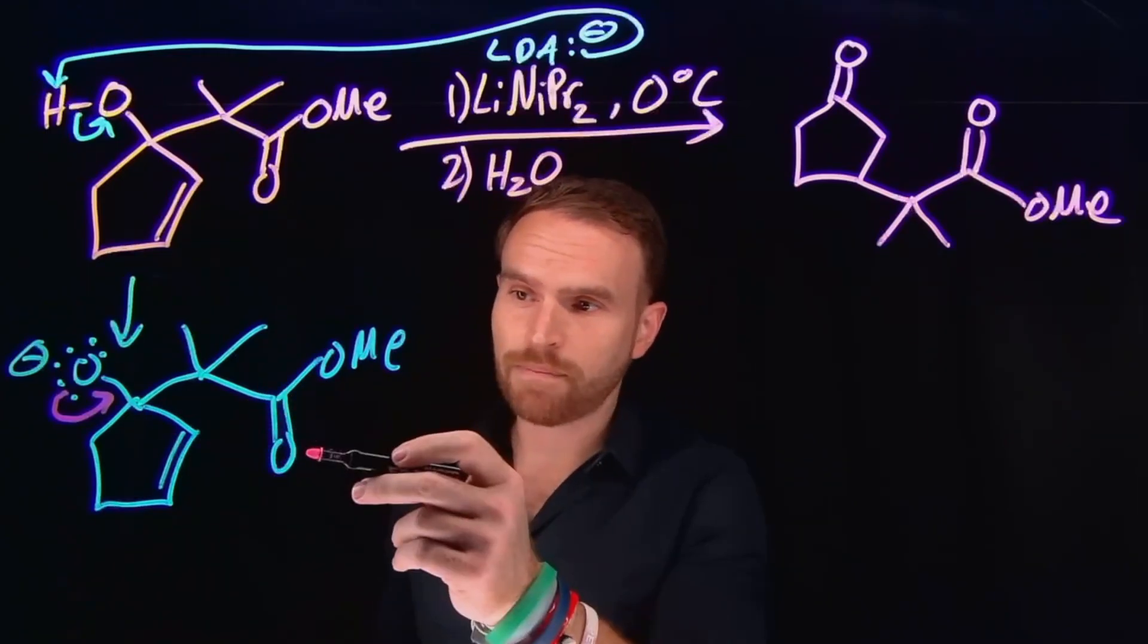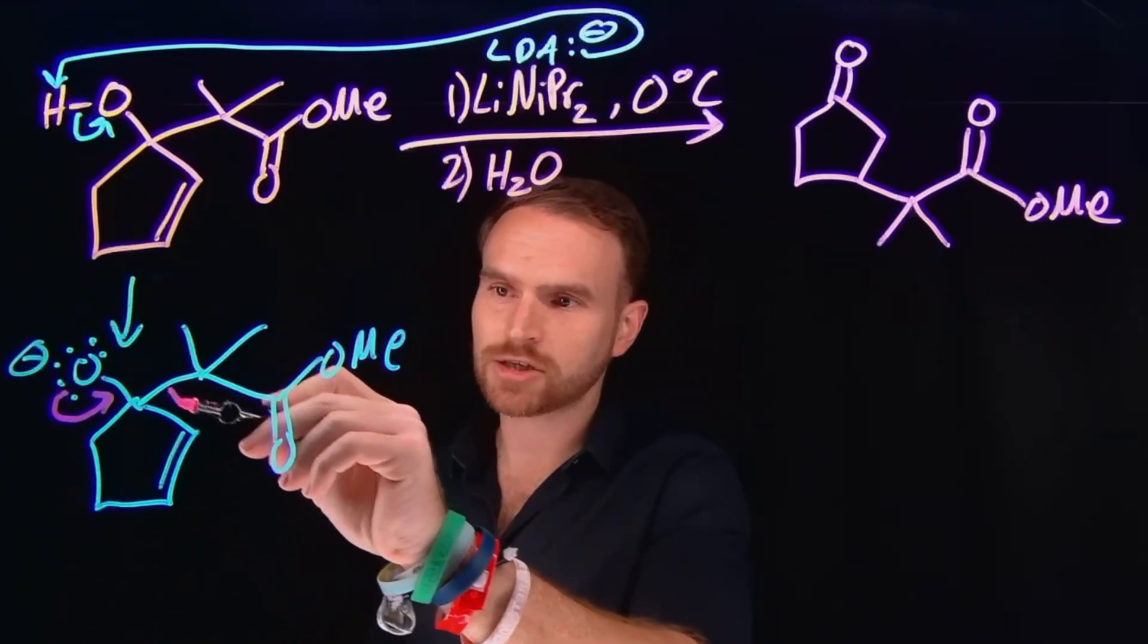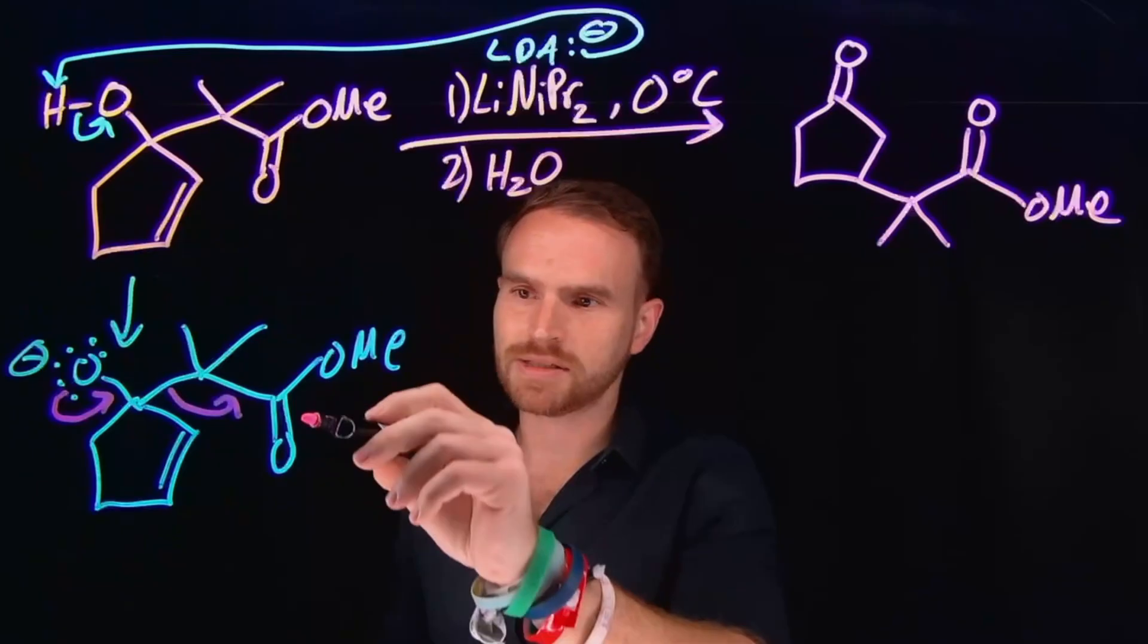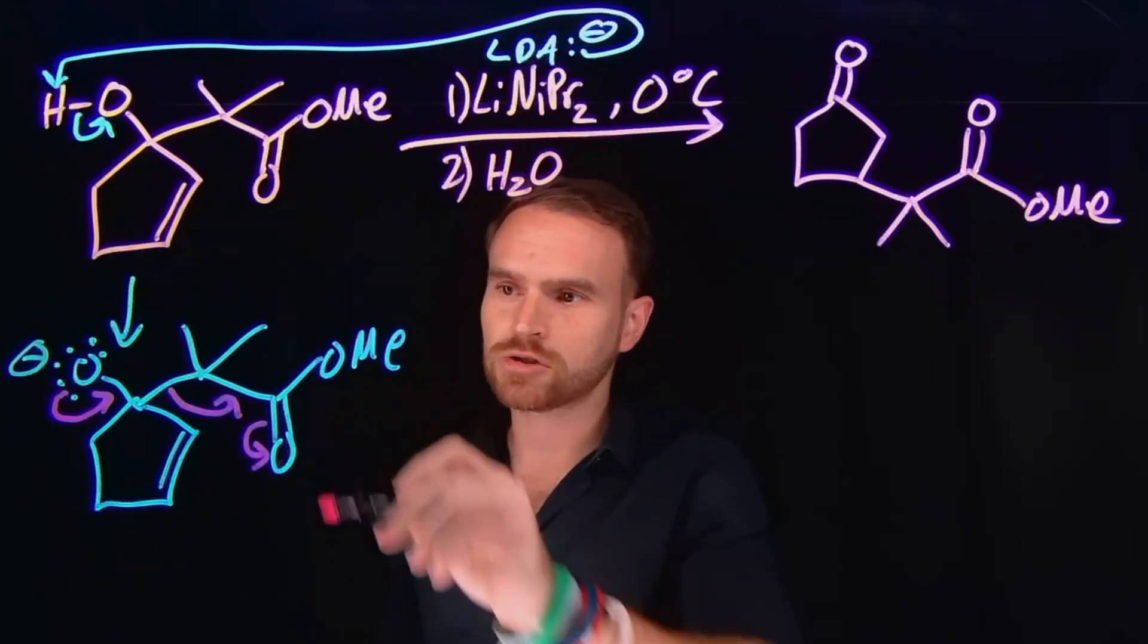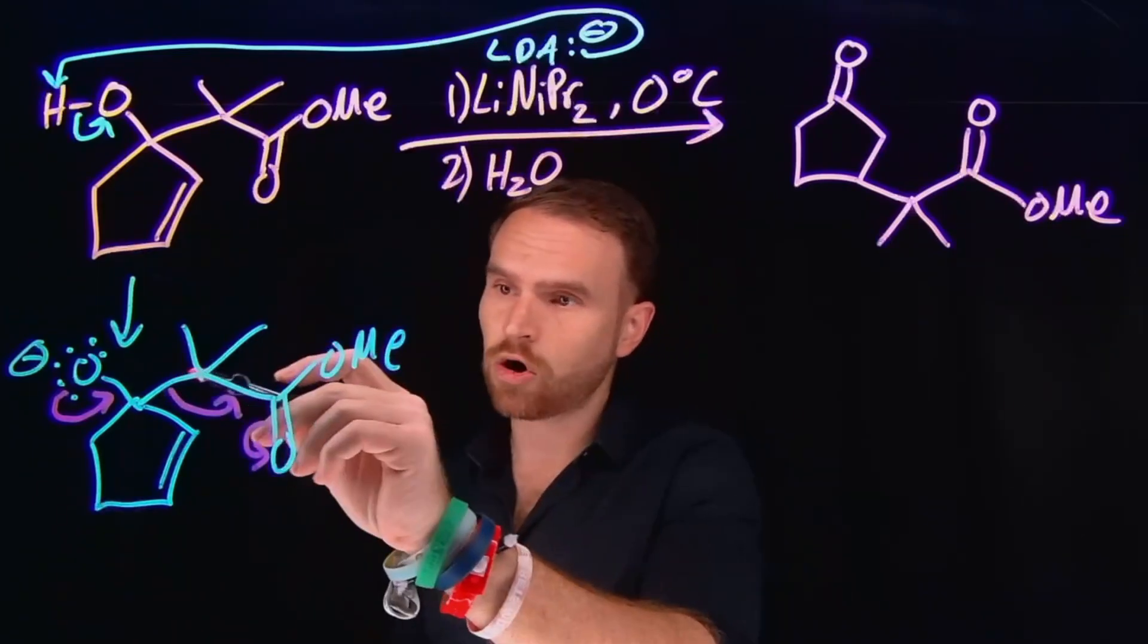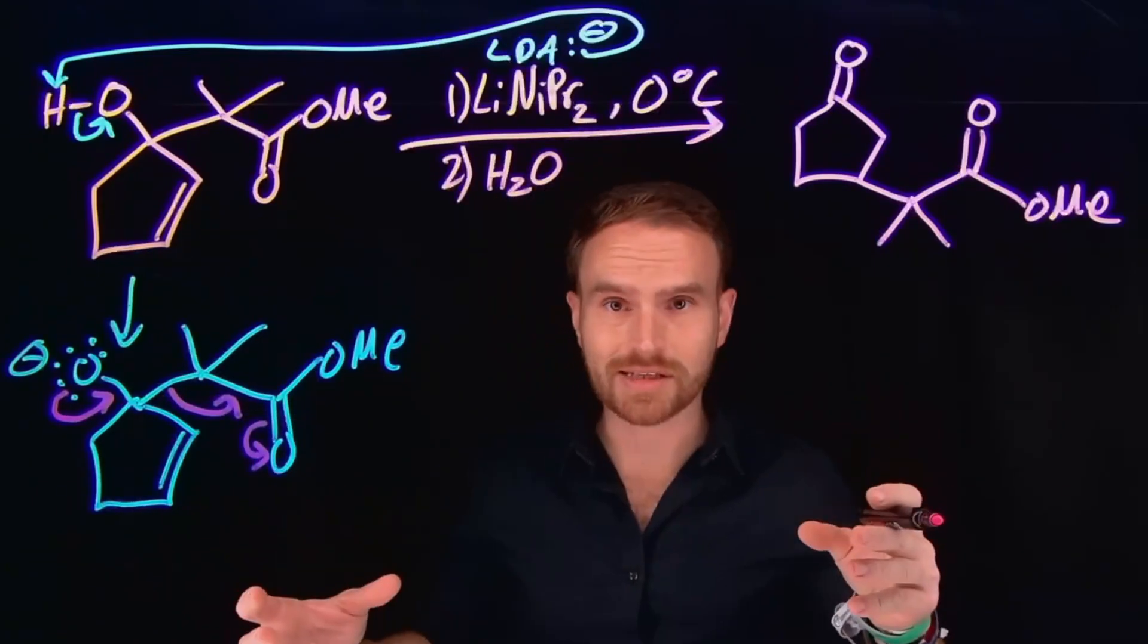And since that would make this carbon have five bonds to it, it actually moves these electrons over to forming an enolate species at this position. And it also serves to break apart this carbon to carbon bond, which separates these into two different molecules.